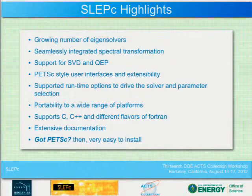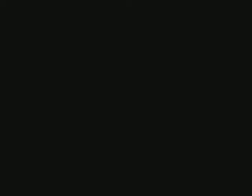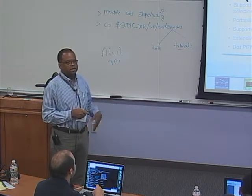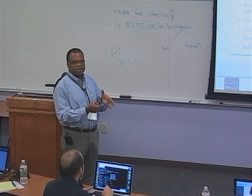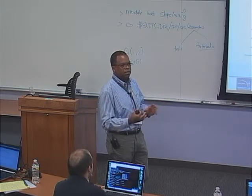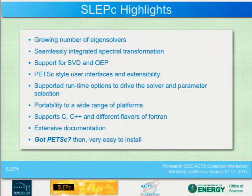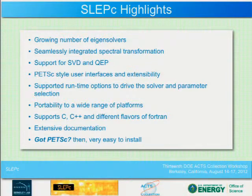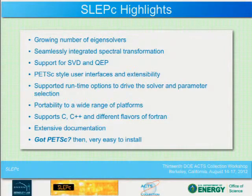Some highlights of the library: PETSC was used to extend and build a lot of functionality. The complexity of switching algorithms — going from standard to generalized, or to shift-and-invert — is handled internally without the user having to do that setup. But if you do need to manipulate solvers directly, you can go to the KSP level. The interface at the top always returns the same set of eigenvalues — you don't need to transform them back. It is portable to a wide range of platforms, supports C, C++, and multiple Fortran flavors, has extensive documentation, and is easy to install if you already have PETSC.